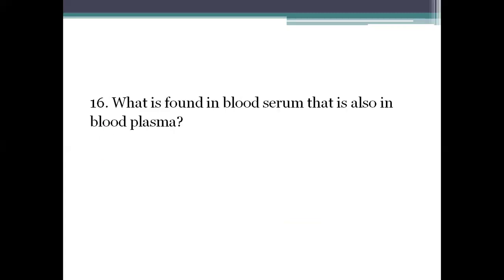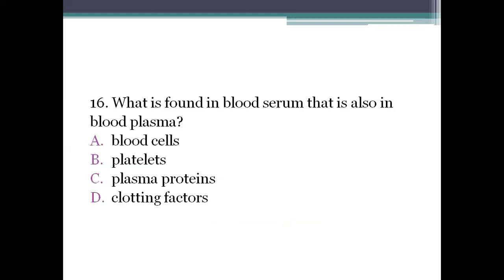Next question: what is found in blood serum that is also in blood plasma? Option A: blood cells. Option B: platelets. Option C: plasma proteins. Option D: clotting factors. The right answer is option C, plasma proteins. Plasma proteins are present both in blood serum and in blood plasma.